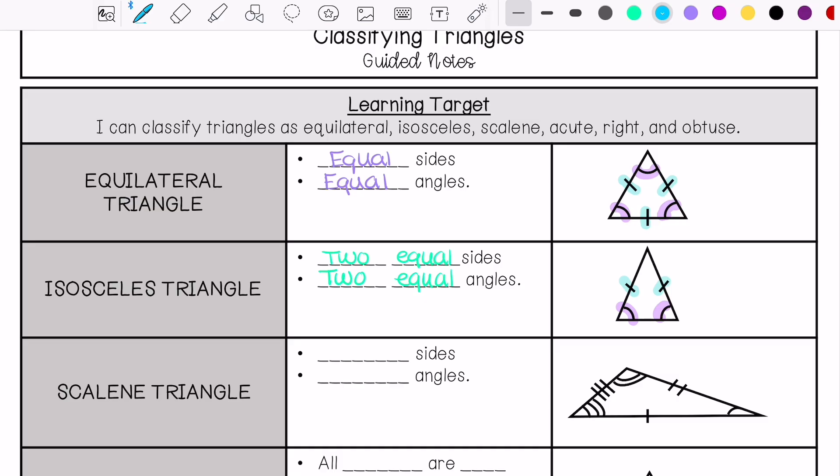A scalene triangle has no equal sides and no equal angles. So as you can see...